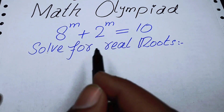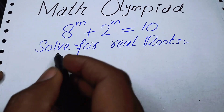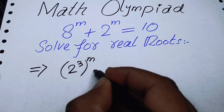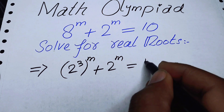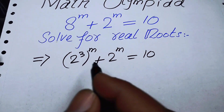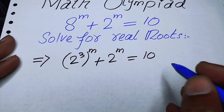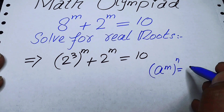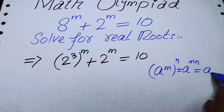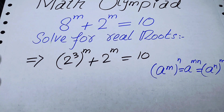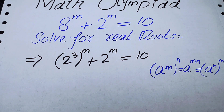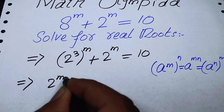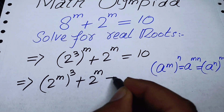We will solve this problem for the real values of m. I can focus on the left hand side and write 8 as 2 to the power of 3, whole power m, plus 2 to the power of m is equal to 10. After that I can apply the well-known exponent law: if we have a to the power of m, to the power of n, it is equal to a to the power of m times n. It means we can interchange its exponents to get the same value.